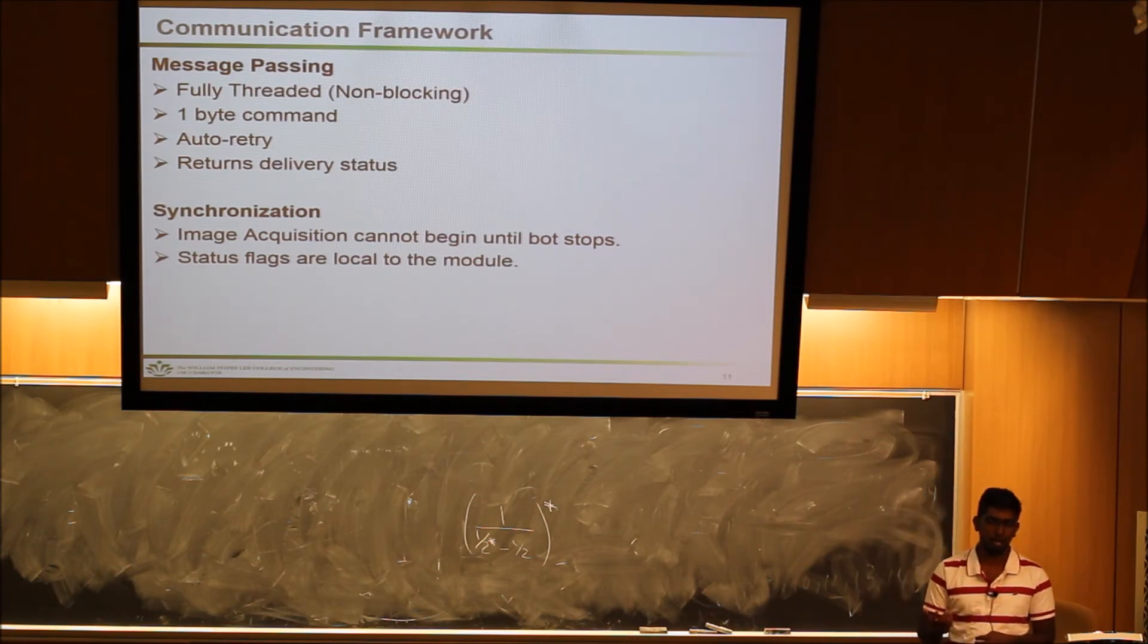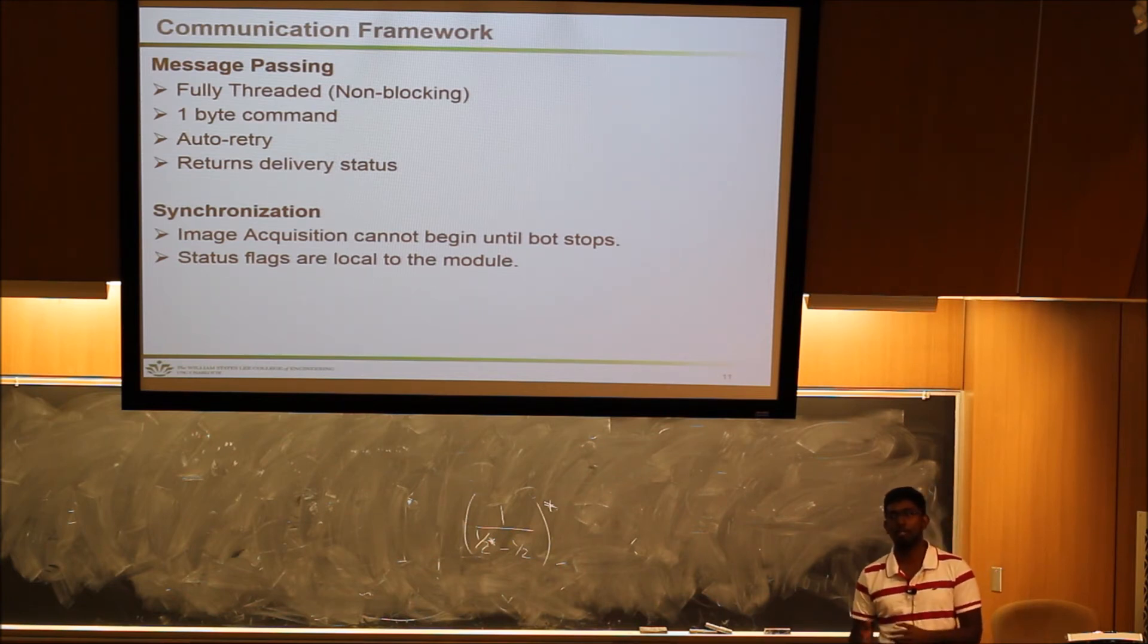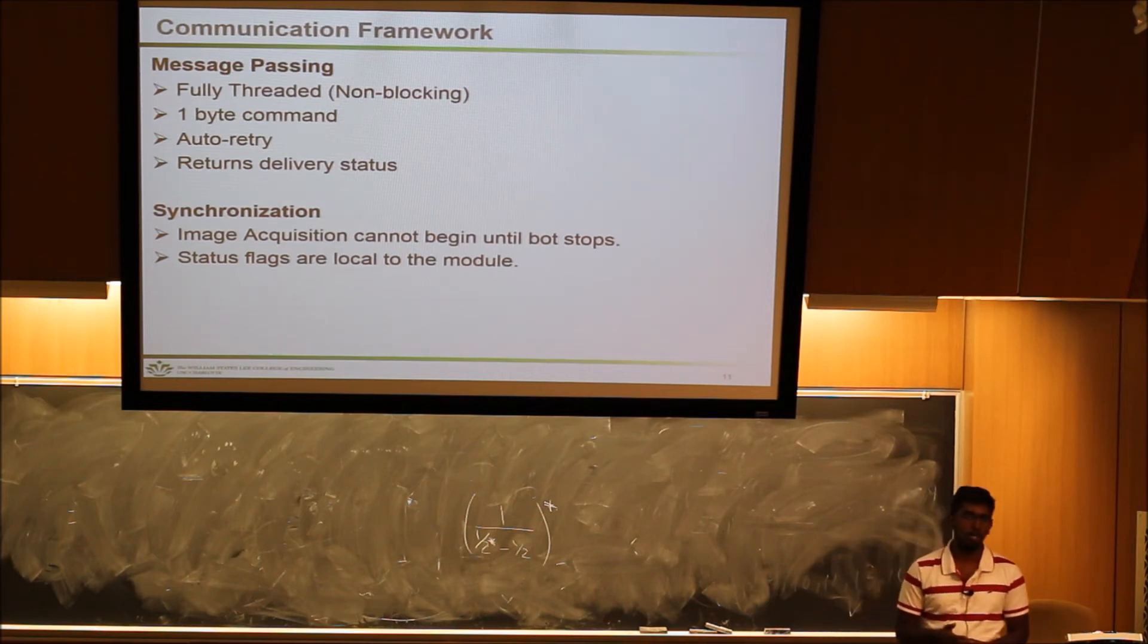These are all one-byte commands. We use fully threaded, non-blocking communication. If the human machine interface wants to send a navigation command like move forward, it just calls the API and wouldn't wait until it actually moves. The parallel threaded program takes care of making sure the message is actually delivered. If the delivery failed, it would also retry for a specified number of times before it returns an error status.